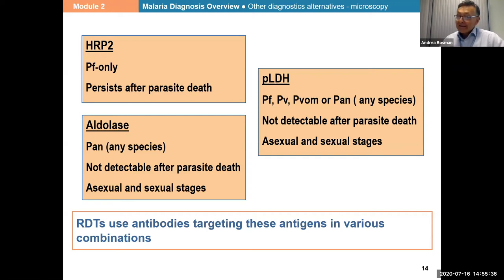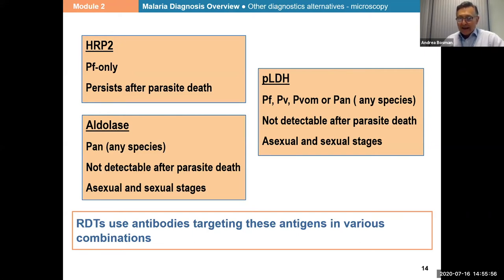Less and less commonly found are tests detecting aldolase. They are not very popular and very few programs buy them. They are only pan-specific, meaning they cannot differentiate any species. Like PLDH, they are not detectable after parasite death, and they are present on both asexual and sexual forms.